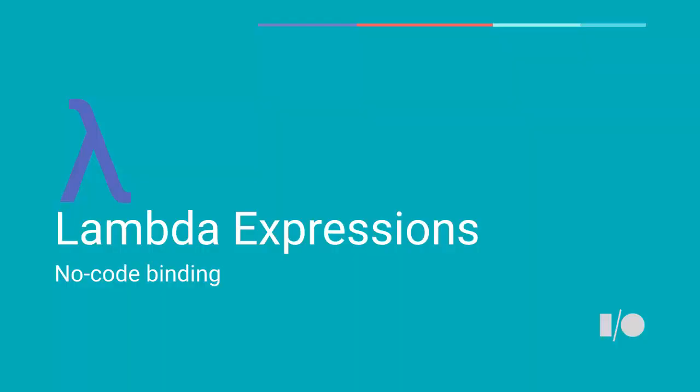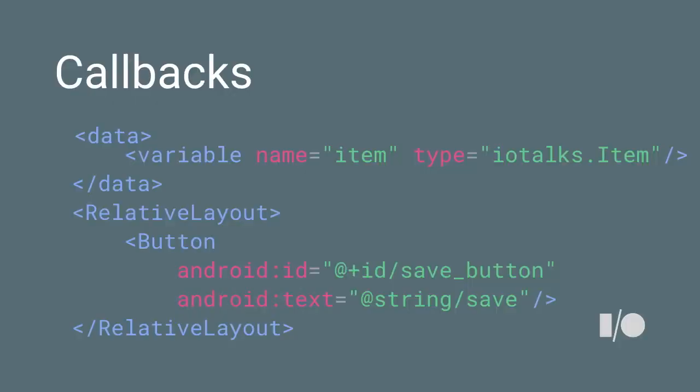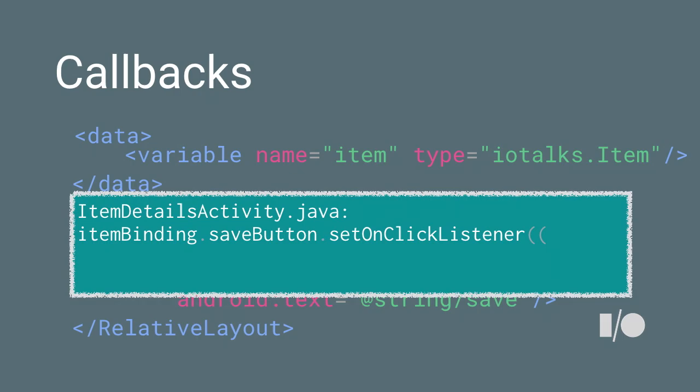Let's talk about lambda expressions. Two-way data binding is one way of grabbing data from the layout back to your data model; another way is the callback side. Everybody wrote this — you get a view and set a click listener on it. Before we introduced this feature, with data binding you'd give the view an ID, get that ID from the binding in your Java code, and set a click listener on it. So we introduced method references to make it more intuitive.